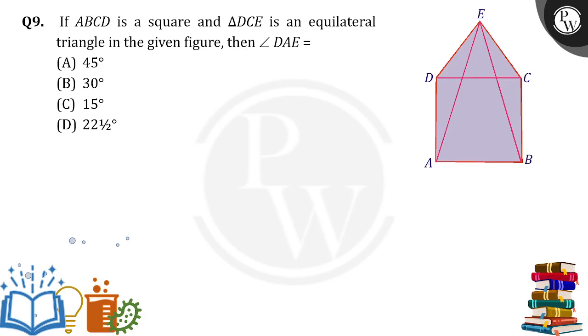Hello everyone, if ABCD is a square and triangle DCE is an equilateral triangle in the given figure, then angle DAE is equal to how much?